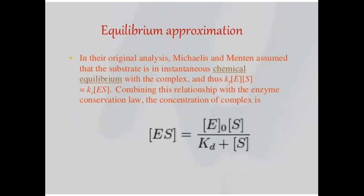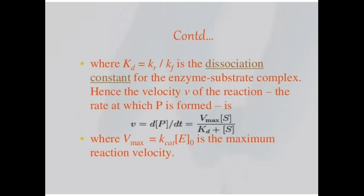In original analysis, Michaelis and Menten assume that the substrate is in instantaneous chemical equilibrium with the complex. Thus combining these relationships with the enzyme conservation concentration law, the concentration of complex ES is equal to E naught S by KD plus S. Continuing this equation where KD is equal to Kr by KF is the dissociation constant for the enzyme substrate complex.